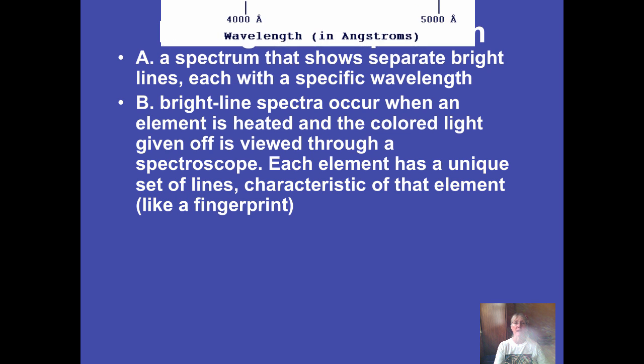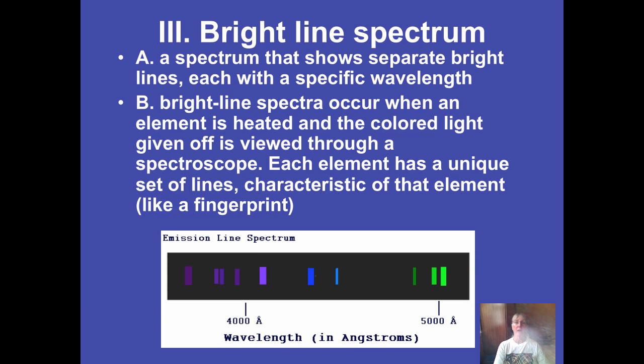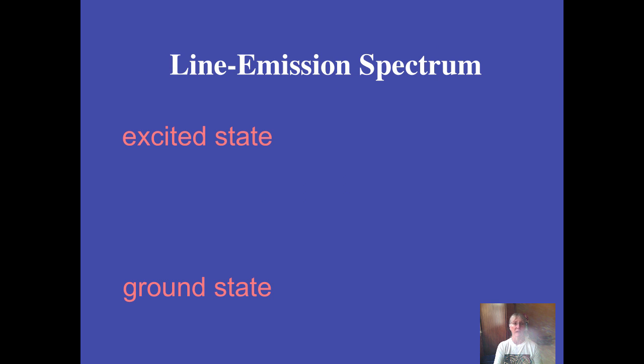They look something like this. Now I want you to notice that it's no longer continuous—see the dark spaces between each of the bright lines? This emission line spectrum is not a continuous spectrum. We're going to connect these bands of colored light and their wavelength and frequency directly to where electrons are located relative to the nucleus of the atom.